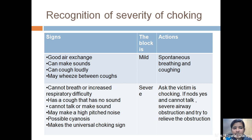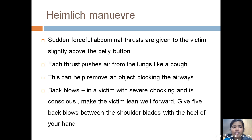For severe airway obstruction we follow the Heimlich maneuver — sudden forceful abdominal thrusts given to the victim slightly above the belly button. Each thrust pushes air from the lungs like a cough, which can help remove the object blocking the airway. We also follow the back blow technique: lean the victim forward and give five back blows between the shoulder blades using the heel of one hand, covered with the non-dominant hand, then make thrusts on the abdominal wall below the breast. In infants, back thrusts can be made by placing the heel of your hand on the infant's back.